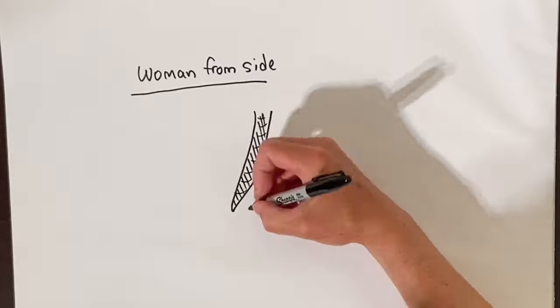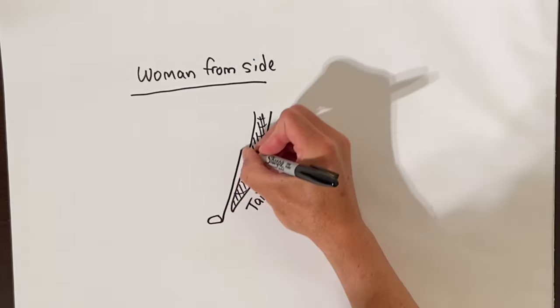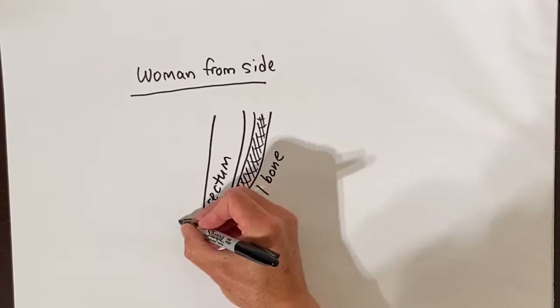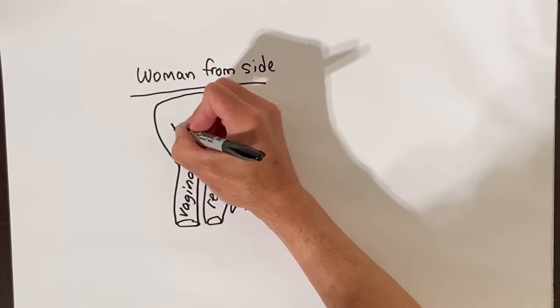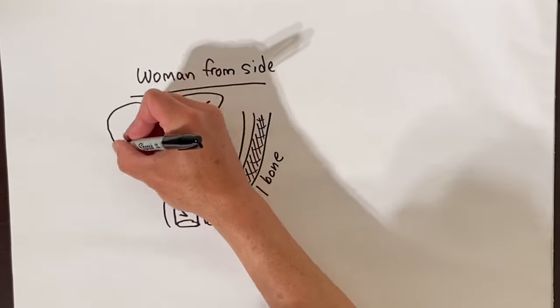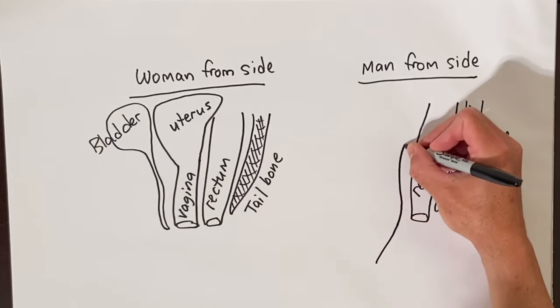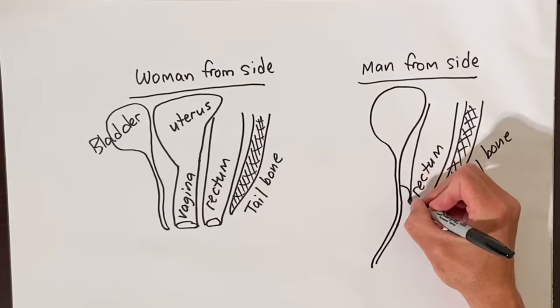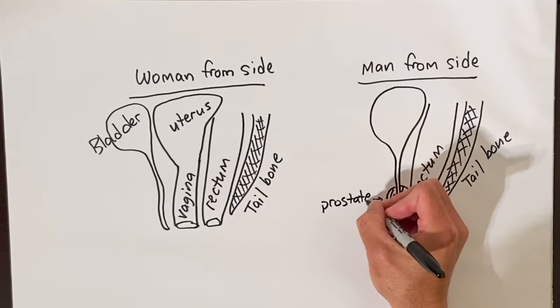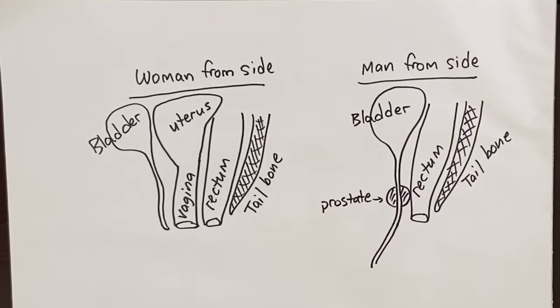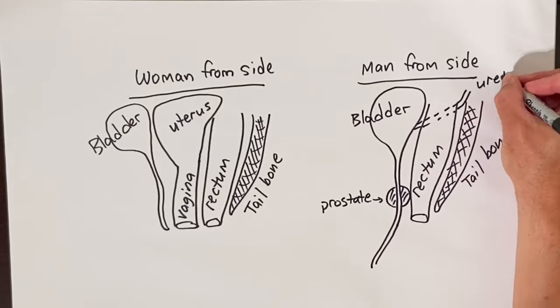The surgery for rectal cancer is the most complicated of the colon and rectal cancer surgeries. This is because you have to remove the rectum from the fat and organs in the pelvis. The other organs, such as the uterus and vagina in women or the bladder and prostate in men, are very close to the rectum. The ureter tubes drain urine from the kidney to the bladder, and these are also close to the end of the colon and the rectum.